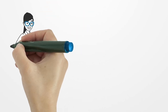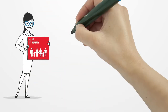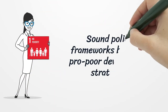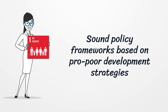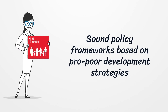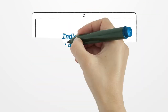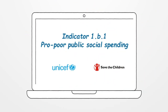To deliver on its ambition to end poverty in all its forms, SDG 1 explicitly calls for sound policy frameworks which are based on pro-poor development strategies. This is now possible thanks to Indicator 1B1, Pro-Poor Public Social Spending, that came from a proposal from UNICEF and Save the Children.